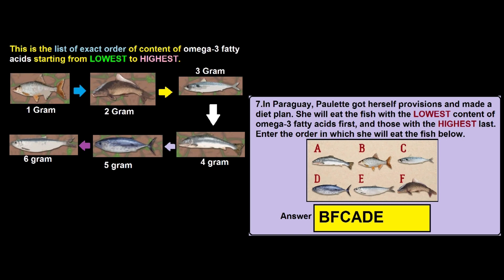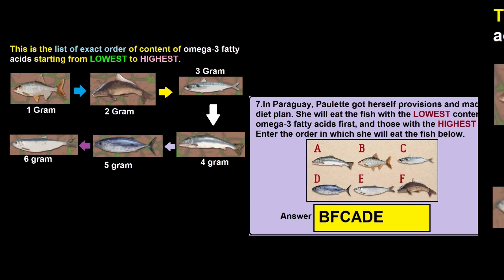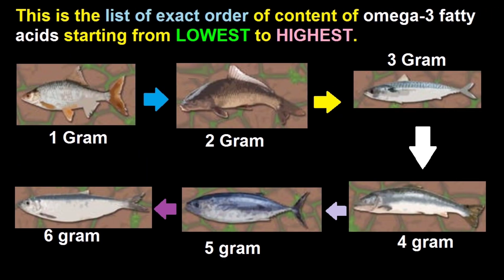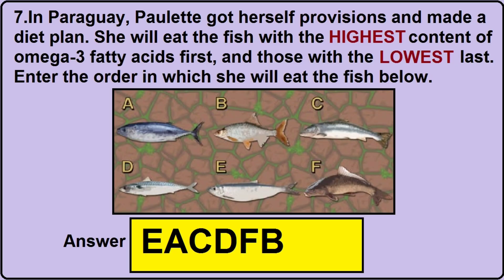Since I have shown you the exact way of doing this question, I will now show you some examples. You must read the question very carefully, as sometimes it asks from highest content to lowest content and other times from lowest content to highest content. So read the question carefully, then watch the image and do as I showed you. The first example asks from highest content to lowest content, and the correct answer is EACDFB.